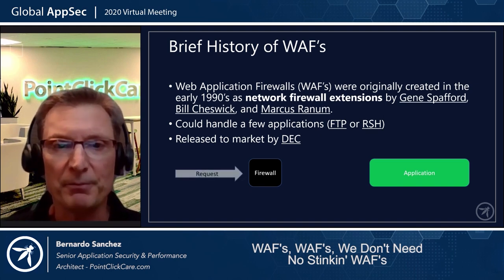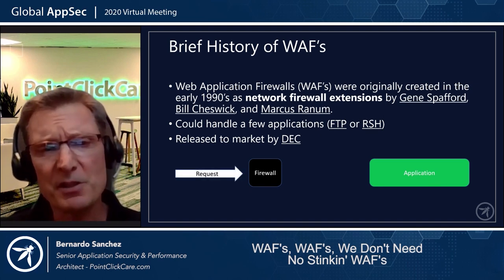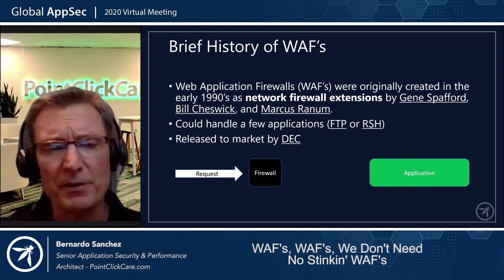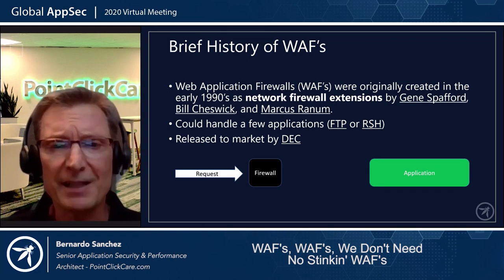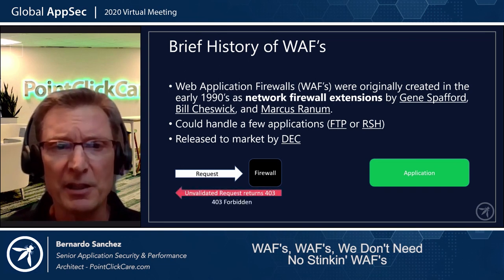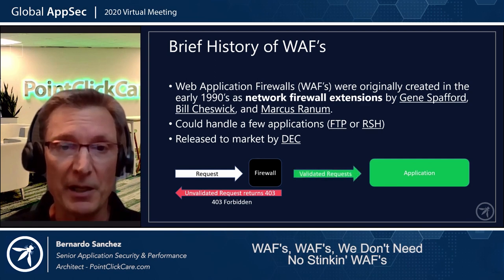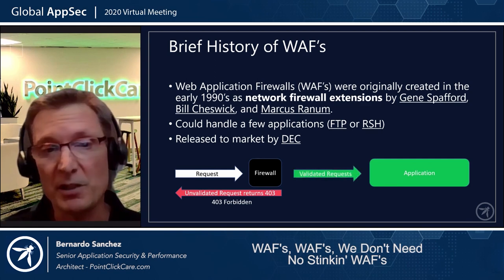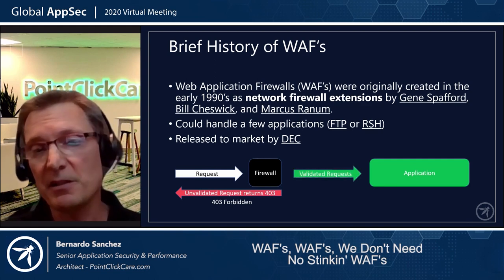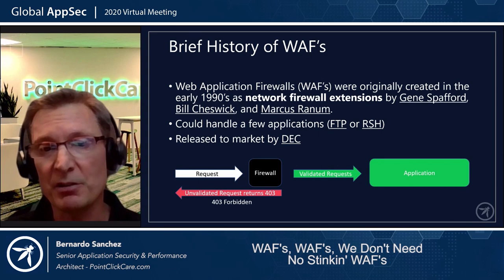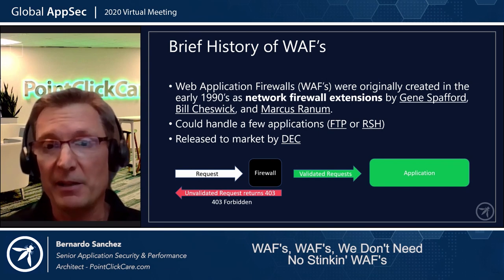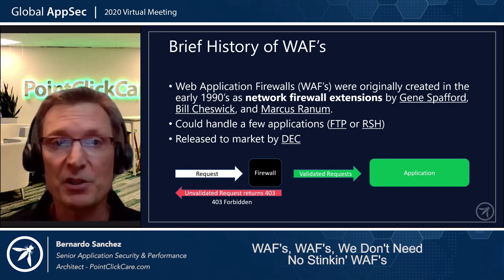Here you'll see in the picture: a request comes into the firewall. If the firewall detects a threat, it returns a 403 Forbidden. Or, if everything is fine with the request packet coming in, it validates it to the application, and the application is deemed secure.